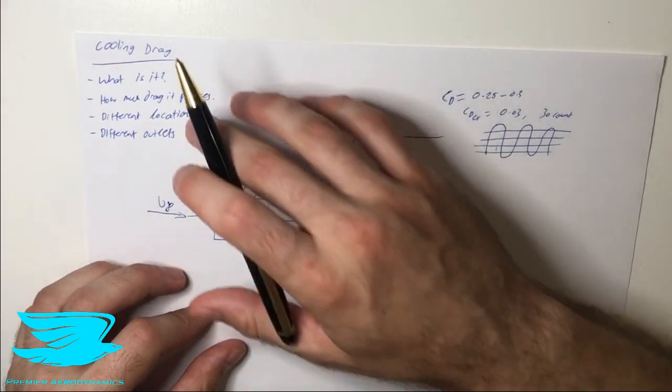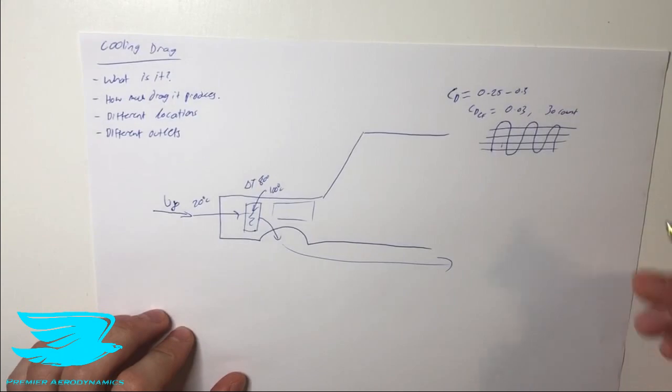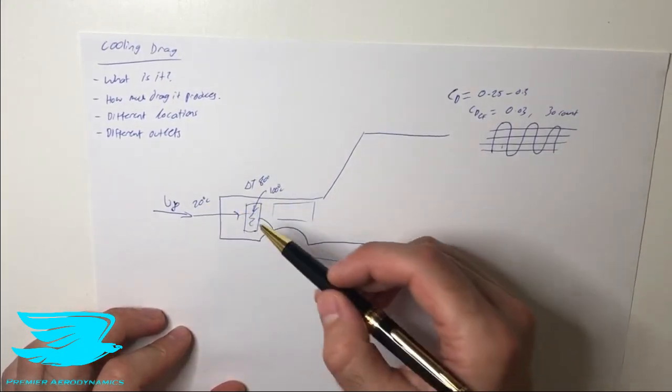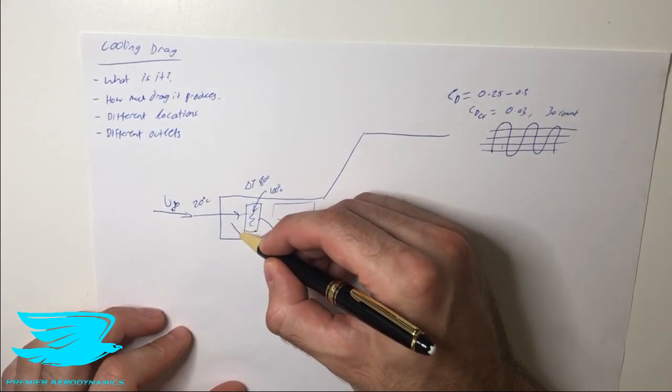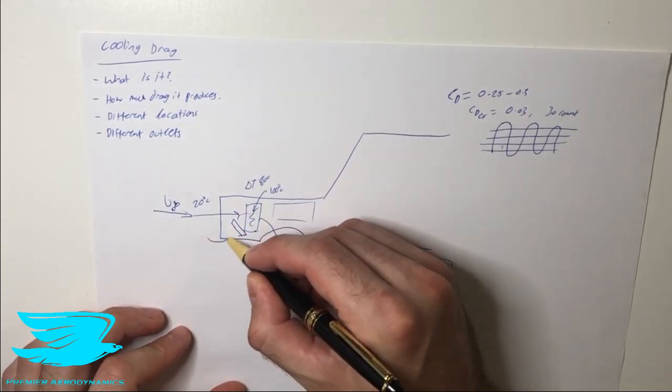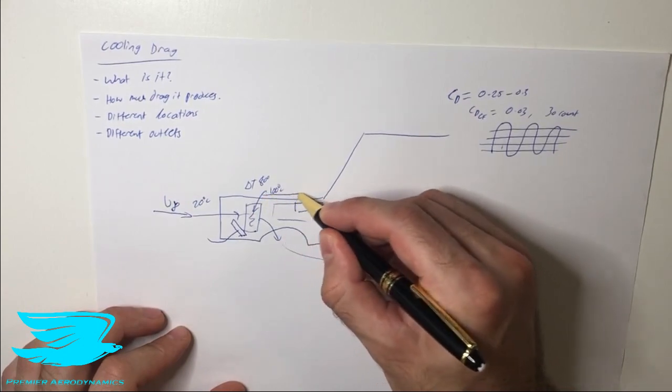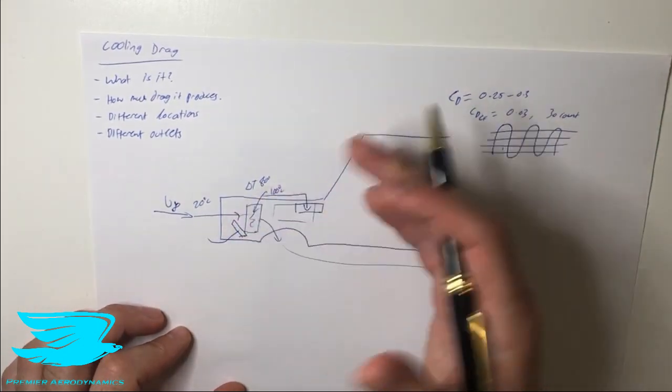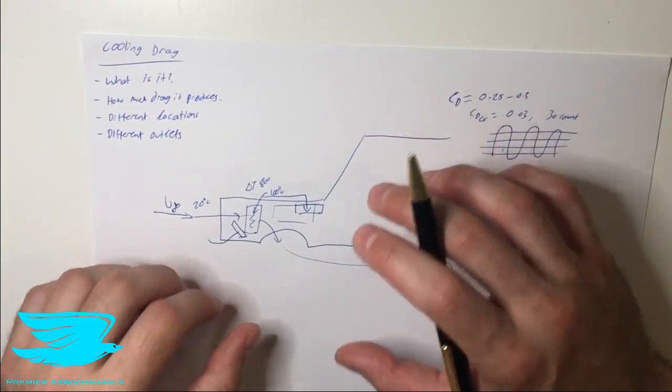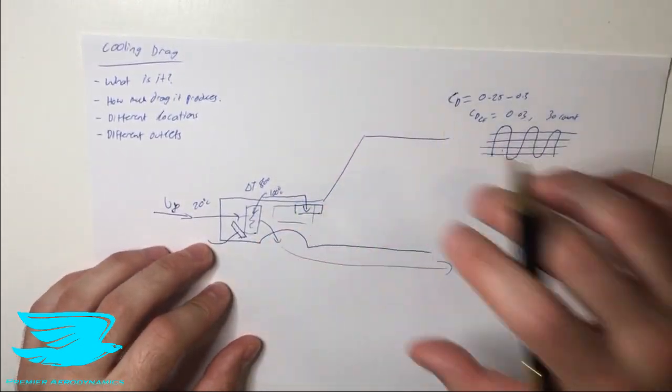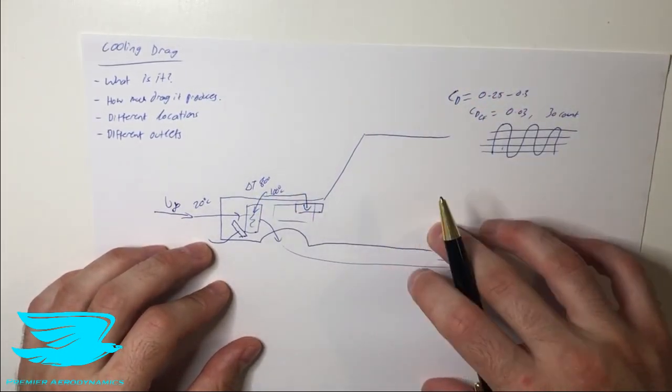So the cooling flow is quite a big component of the total drag of the car, about 10%. Let's talk about the different locations of this cooling flow and the different outlets and how that affects the drag. You can have the radiator at the front, down at an angle here, or up here so the flow comes in and comes down. There are different locations. To be perfectly honest, there's not really much of an effect of these different locations on the drag coefficient. What's far more important is where the cooling flow goes from there.